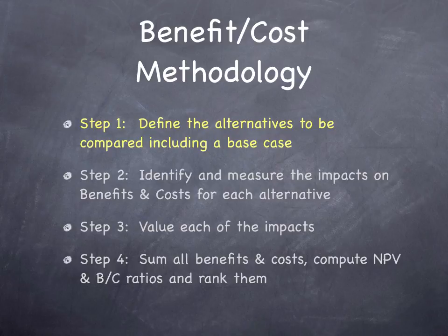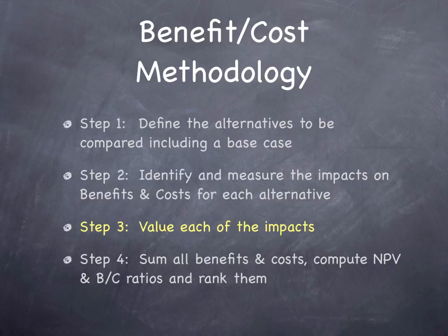We need to figure out what alternatives we're going to consider compared to the base case, typically the no-build case. We then want to identify and measure the benefits and costs of each alternative, and value each of the impacts. For instance, if we know what the travel speed difference is, we need to know the value of time savings — how much is 10 minutes worth per person, and how many people will benefit? Then we sum all benefits and costs, compute a net present value (NPV), compute benefit-cost ratios, and rank them by benefit-cost ratio.